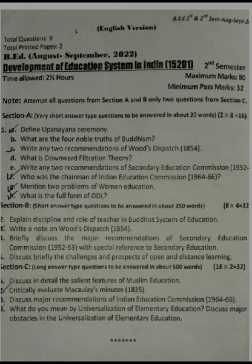Moving to Section B — short answer type questions. Each short answer type question comprises of eight marks. The second question in short answer type is: explain discipline and the role of the teacher in the Buddhist system of education.